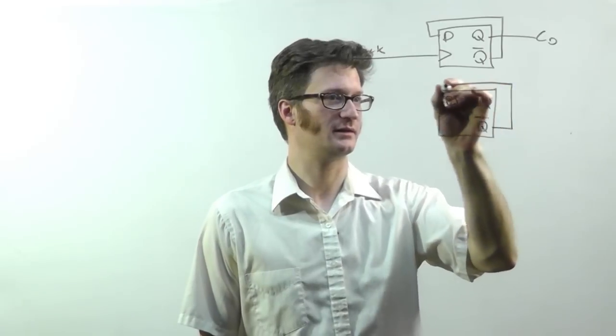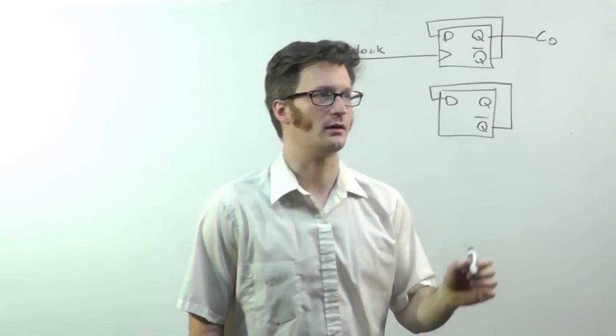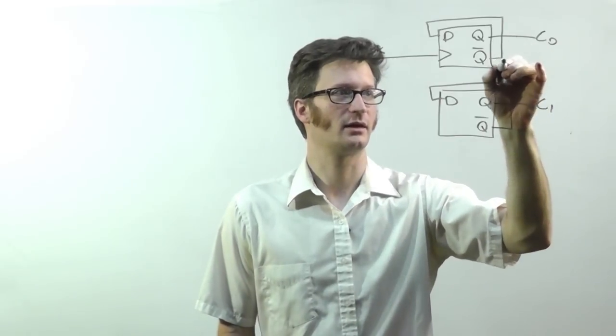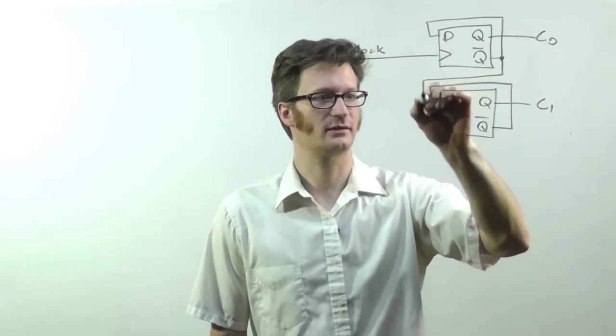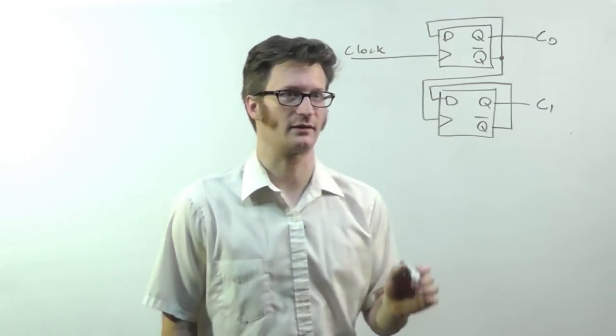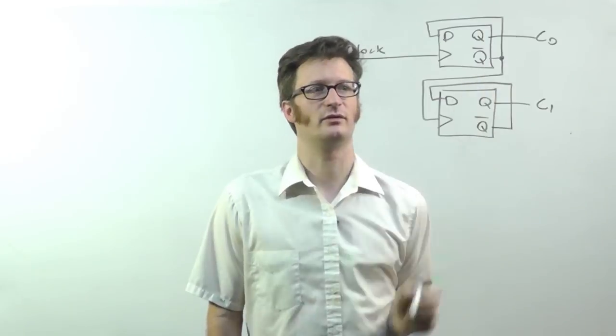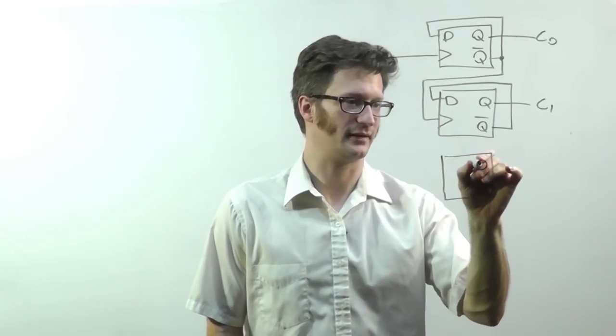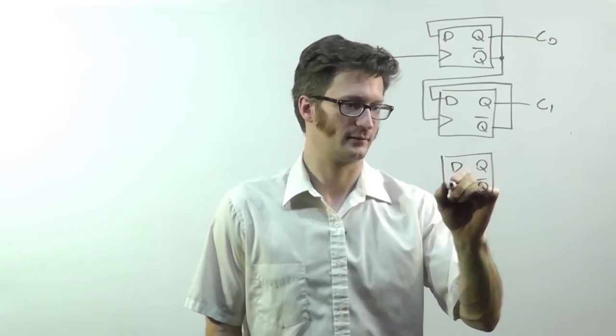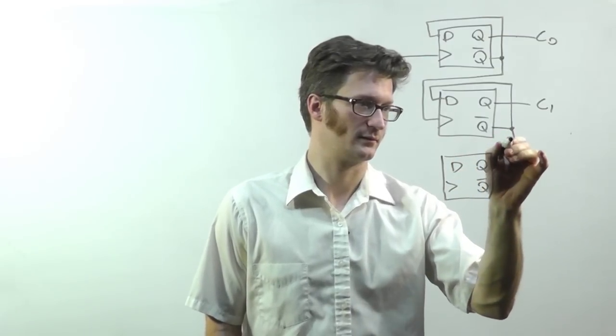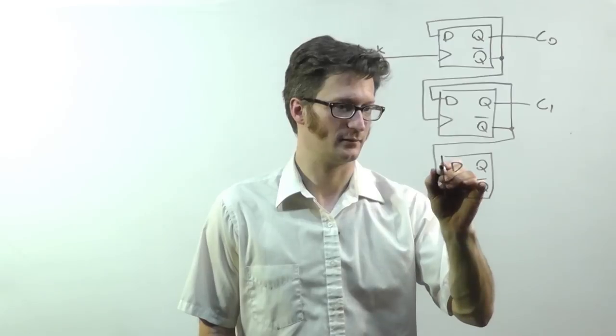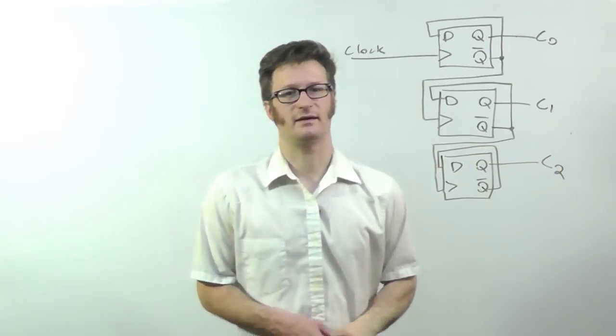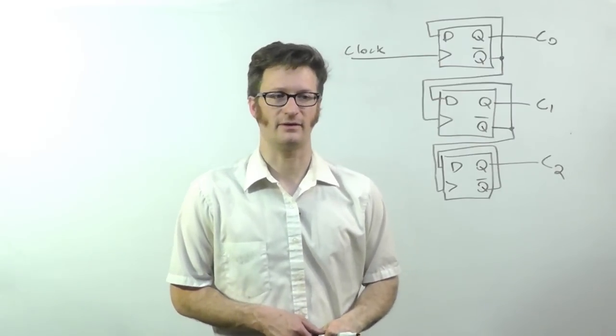So this one we're feeding this into D as well. And we have count one. And the way this is going to work is that we tie in over here and we bring this into the clock. Instead of using the actual clock, we're going to tie in to Q bar. And if we wanted another bit, we could do the same thing. So that is an asynchronous counter using D flip-flops.